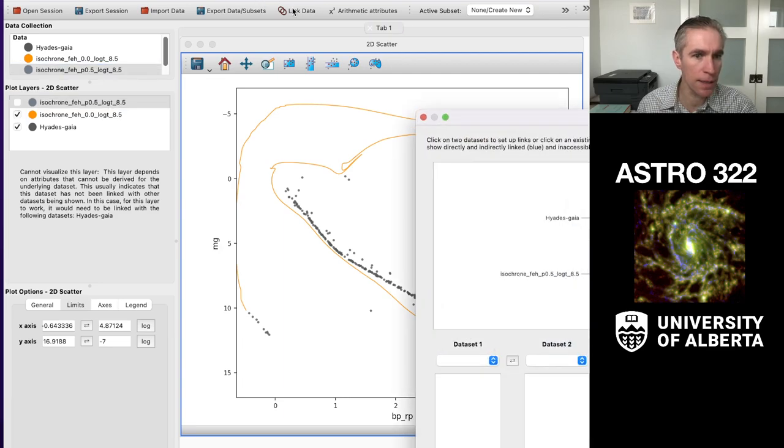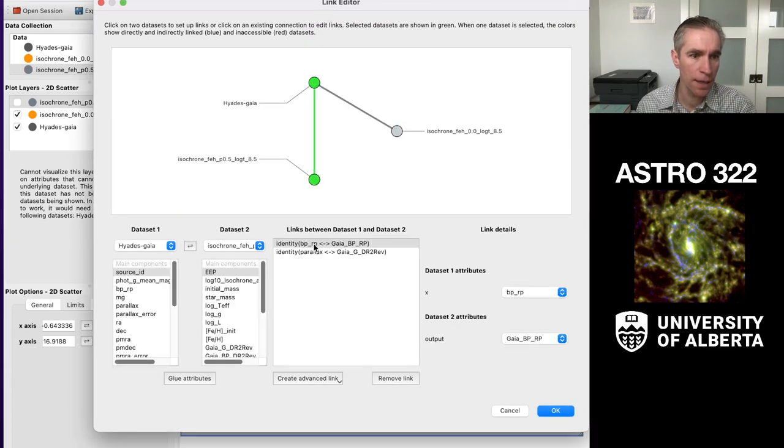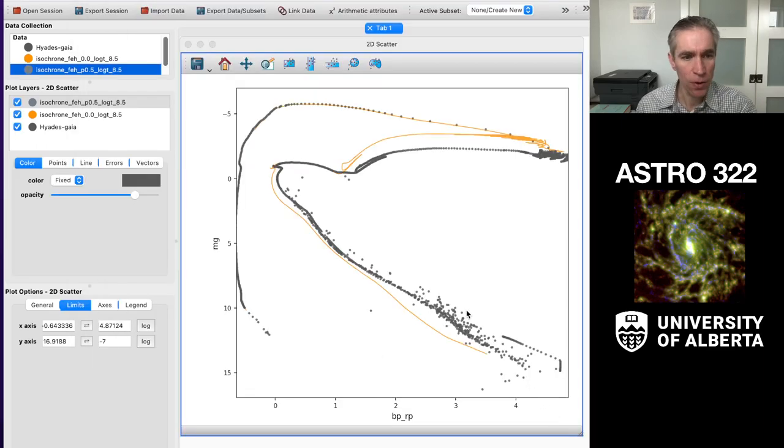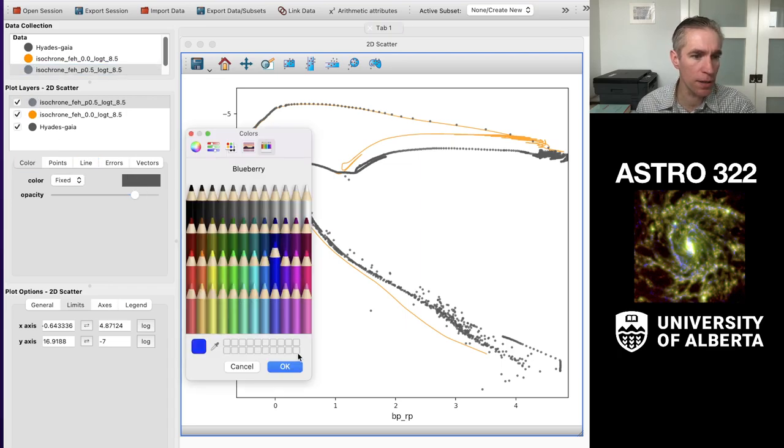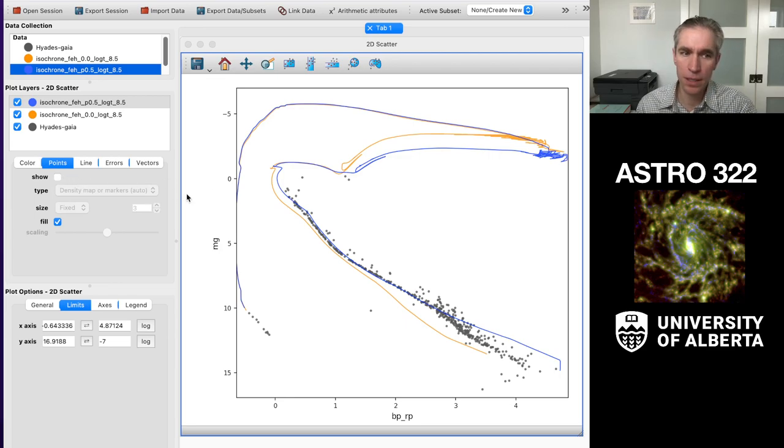Oops, I have failed at a link. So if it gives me this error, cannot visualize, that means my link has not gone correctly. So I got that. BPRP. Oh, I've glued parallax to Gaia DR2. I don't like that link. Instead, I'm going to glue MG to Gaia GDR2. Glue those attributes. Now I got a link. Ooh, this is looking better. So I'll do the same thing to help my poor, terrible eyeballs. I'll make those data points blue. I'll put on a line. I'll turn off the points. Oh, we're getting good.